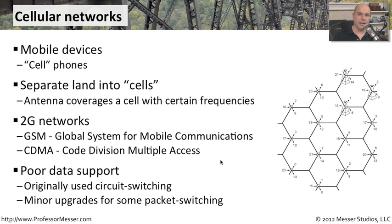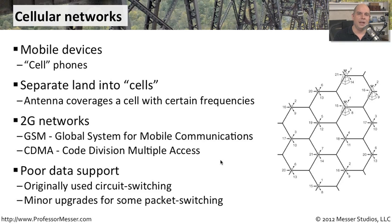These 2G networks really weren't designed to send data, at least not originally. They were analog connections designed for circuit switching, which means you would call a phone number, talk to somebody, and hang up. Data connections are more packet switching — they can be used at any time and communicate to many different locations. So what they did was make some minor upgrades to 2G so that we could do a little bit of data and packet switching inside of that, but speeds were very low and very limited.